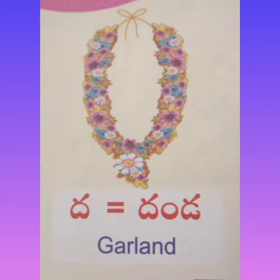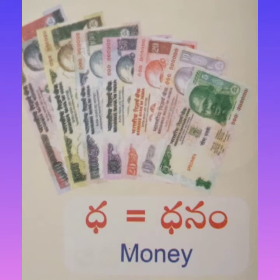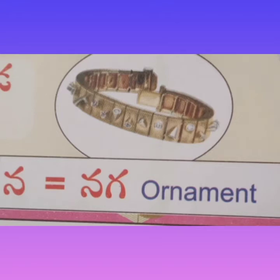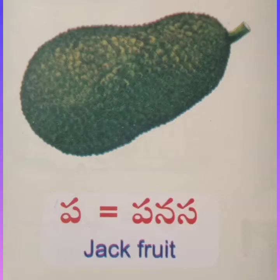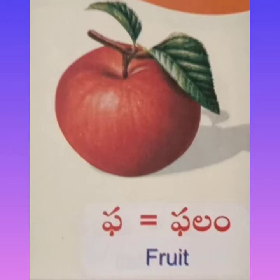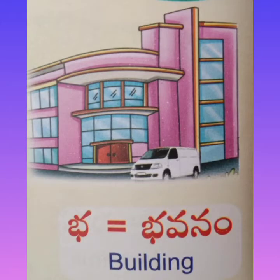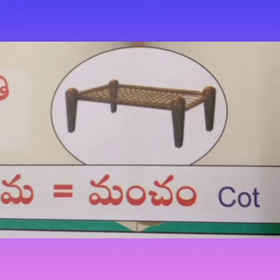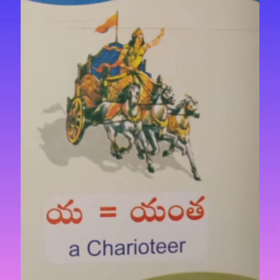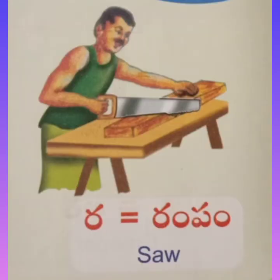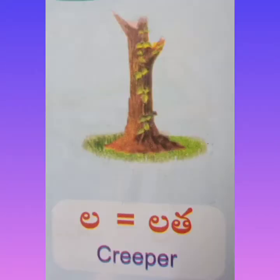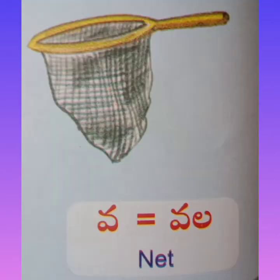Ana — veena (a musical instrument); Ta — tabla; Ta — ratam (chariot); Da — dhanda (garland); Da — dhanam (mani). This letter is Na — naga (ornament). Pa — panasa (jackfruit); Fa — falam (fruit); Ba — banthi (ball); Ba — vanam (building); Ma — mancham (cot).